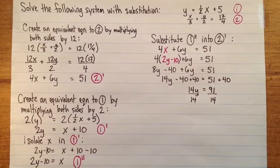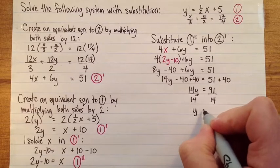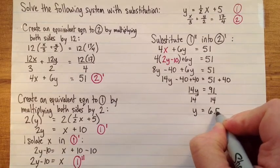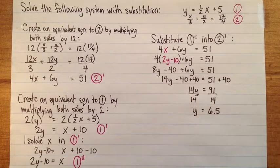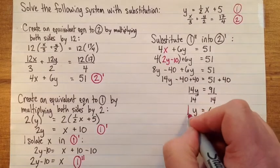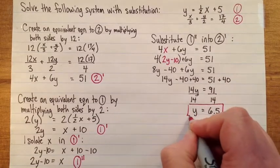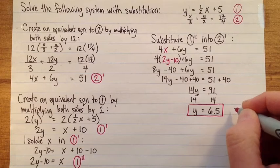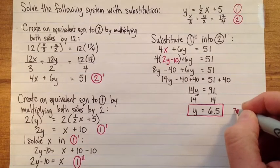And I get 14y equals 91. So now I need to divide by 14. I'll do that on my calculator here. 91 divided by 14 is 6 and a half. There we go. I've got one of the variables done.